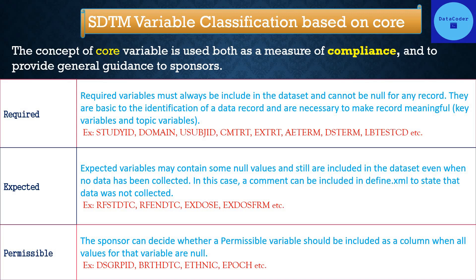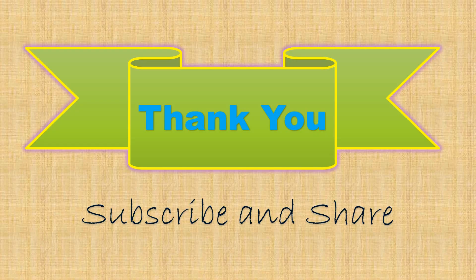Permissible variables can either be included or, if all records are blank, may be excluded from the dataset. The sponsor decides whether a permissible variable should be included as a column when all values for that variable are null. Examples include DSGRPID, BRTHDTC, ETHNIC, and EPOCH.